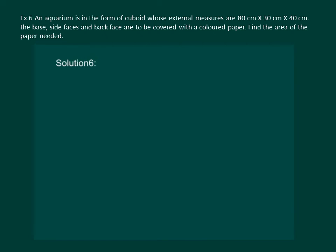Let us read the question. An aquarium is in the form of a cuboid whose external measures are 80 cm, 30 cm and 40 cm. The base, the side faces and back face are to be covered with a coloured paper. Find the area of the paper needed.